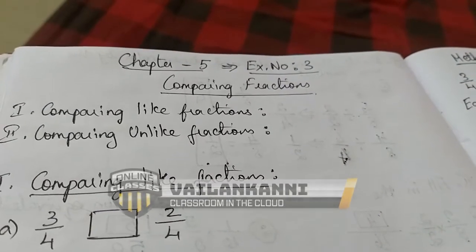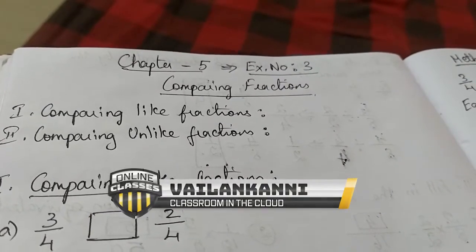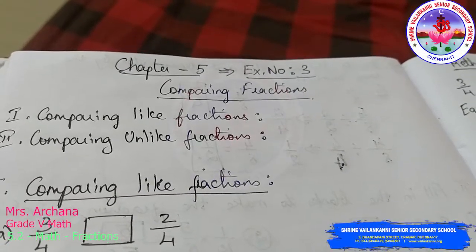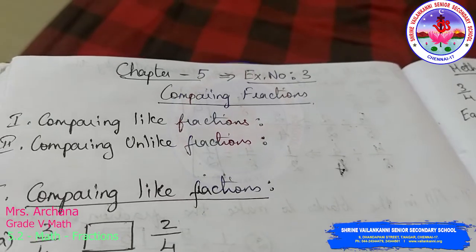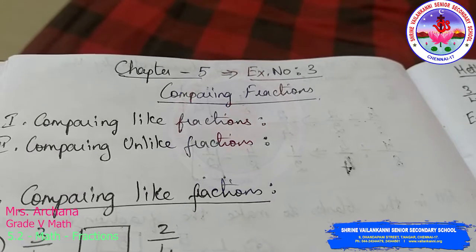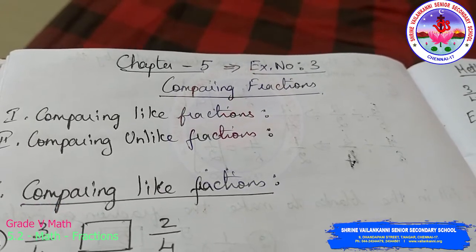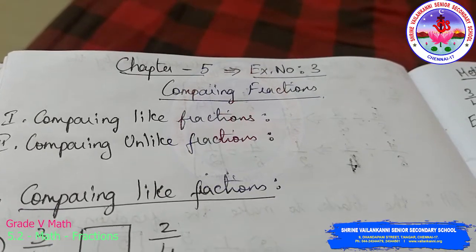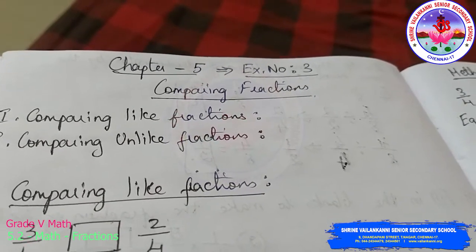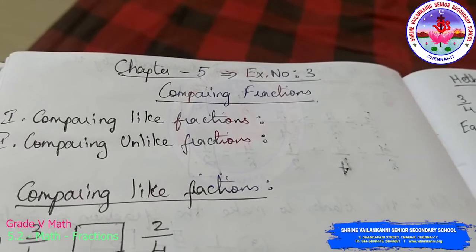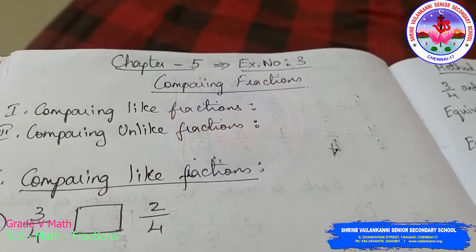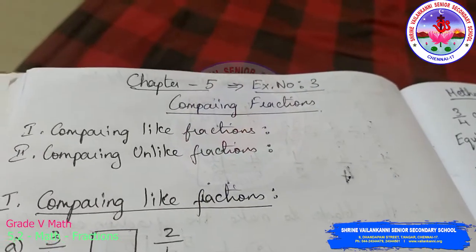Hi children. Today's class will be a continuation of chapter 5, exercise 3. Under exercise 3 we are going to see how to compare given fractions. Comparing fractions has two ways: comparing like fractions and comparing unlike fractions. Like and unlike fractions you have already learnt in fourth standard, so I will just give a small hint.